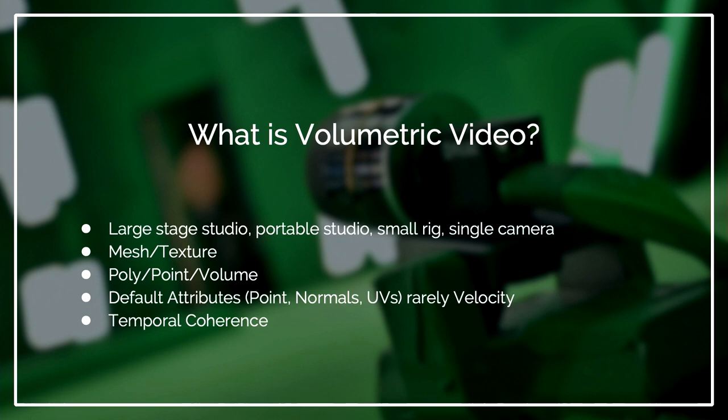What it outputs normally is a mesh with a texture sequence. In some cases, there are point clouds with color. Usually the raw data is inconsistent with topology shifting every single frame. There's something called temporal coherence, also known as tracked meshes, where you take a key mesh and track it over a series of frames to maintain topology. We've taken it to the next level and created a volume solver that point-deforms the entire sequence as a single data set.